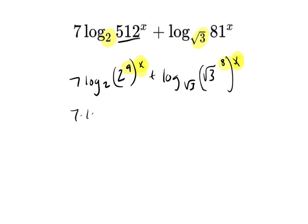And then you get 7 times the log base 2 of 2 to the 9x plus log base square root of 3 of square root of 3 to the 8x. And then you can use your law of logs to bring these two things down in the front.